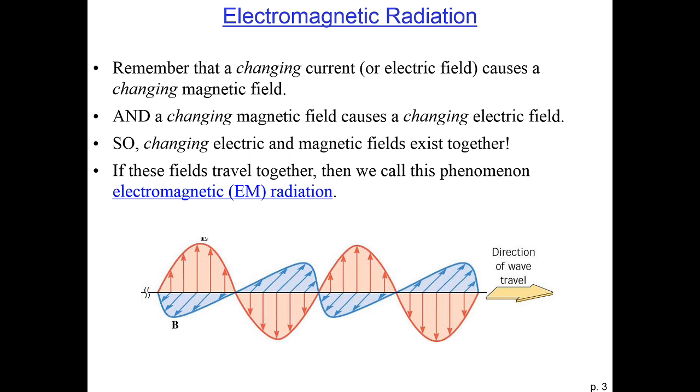So the idea here is that we have a changing electric field that induces a changing magnetic field that induces a changing electric field. And these changing fields exist together and propagate one another.